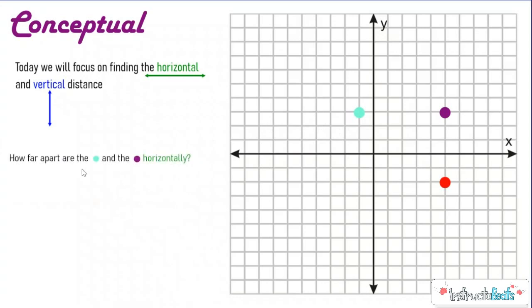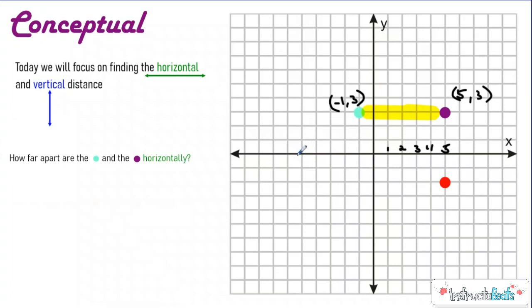So let's take a look at this question: how far apart are the light blue dot and the purple dot horizontally? Horizontally means side to side, so we're looking at the x-axis. We're really talking about the absolute value between the two ordered pairs. The purple ordered pair is five, three and the light blue ordered pair is negative one, three. A lot of people would say the distance is five because purple is five away from zero. But we're talking about how far apart they are from each other on the number line — the x-axis.